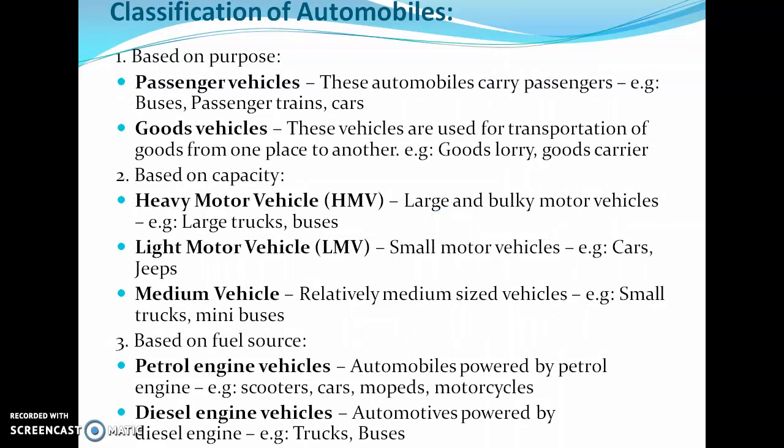Let's see the classification of automobiles. The first classification is based on Purpose. Under that, Passenger Vehicles are automobiles that carry passengers, such as buses, trains, and cars. Then Goods Vehicles, which are used for transportation of goods from one place to another, such as goods lorries and goods carriers.